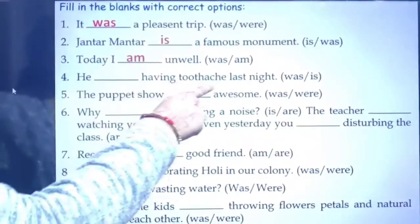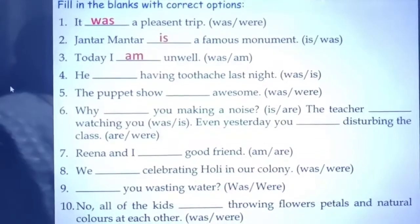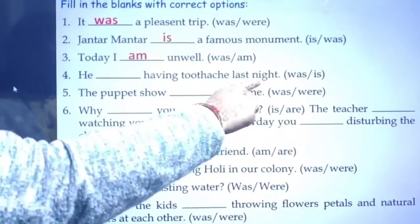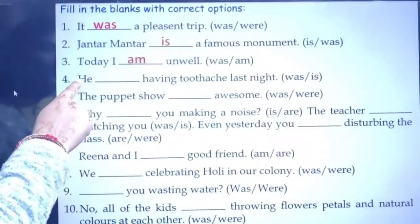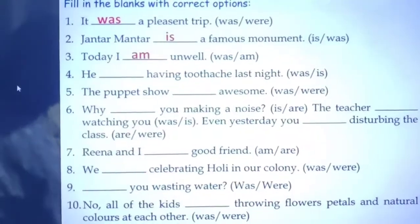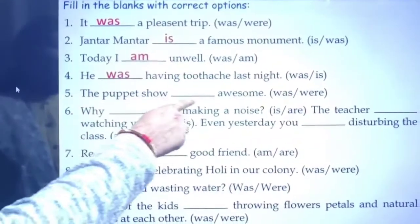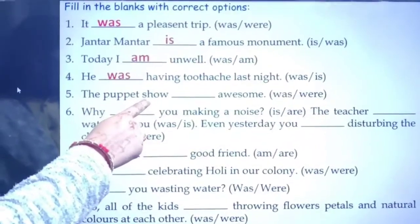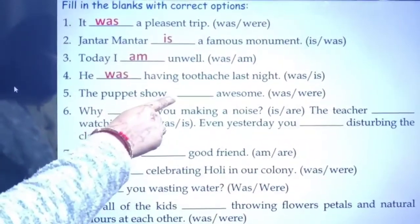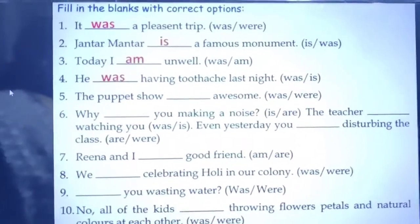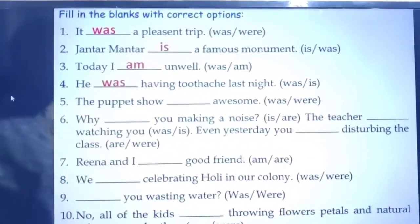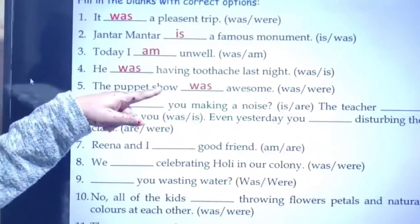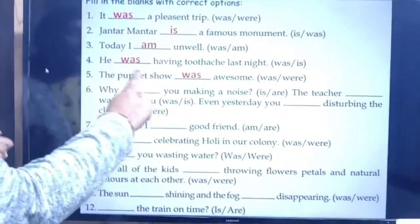Next: 'He ___ having a toothache last night' — was or is? Last night means the previous night, past form, so: he was having a toothache last night. Next: 'The puppet show ___ awesome.' The show has already been seen — past action. The puppet show is a singular subject, so: the puppet show was awesome.